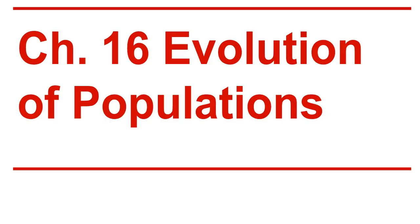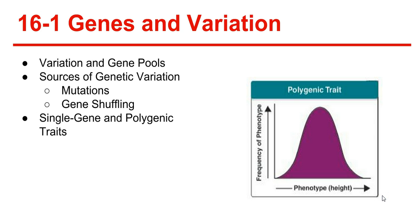Hello, and welcome back to the Prentice Hall Biology textbook. Today we'll be covering chapter 16, Evolution of Populations. 16-1: Genes and Variation.